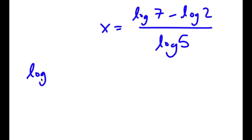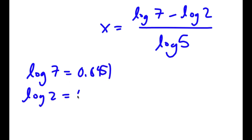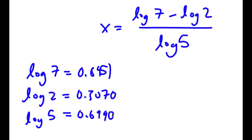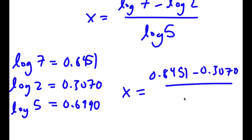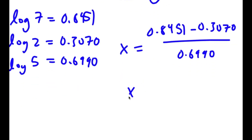Log 7 is equal to 0.8451, log 2 is equal to 0.3070, and log 5 is equal to 0.6990. So x is equal to 0.8451 minus 0.3070 over 0.6990, which is equal to 0.7784.